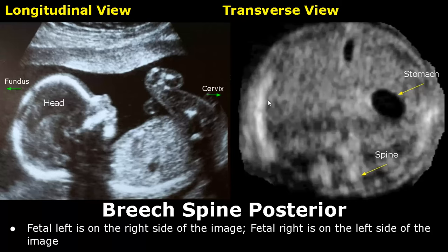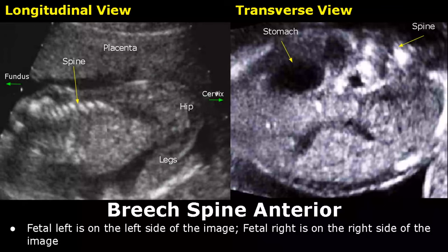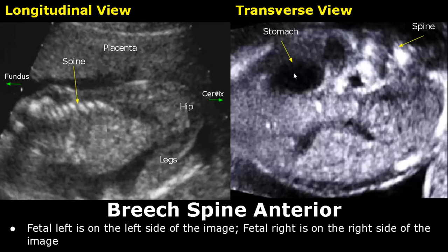In the breech spine anterior orientation, the spine is seen on the upper side of the image. The fetal left is on the left side of the image — that is why the stomach is also seen on the left side. And fetal right is seen on the right side of the image.